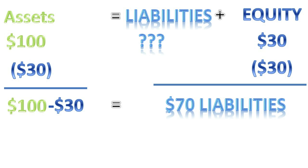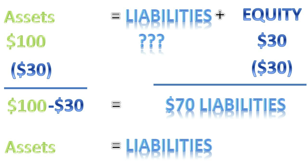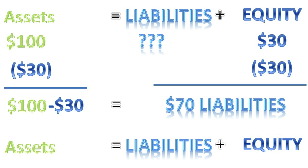When this mathematical equation is written as assets equals liabilities plus equity, it is called the balance sheet equation. Based on the balance sheet equation, it should be clear that any assets not funded or claimed by creditors must have been funded and claimed by its owners, and vice versa.